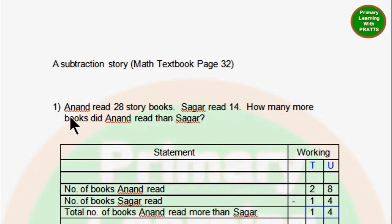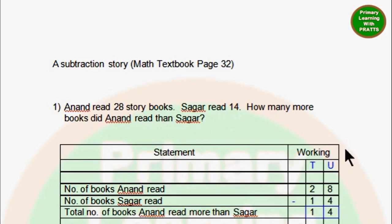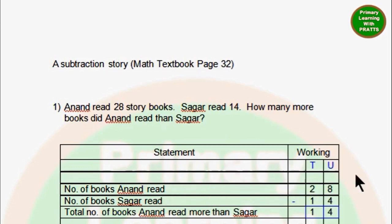The first one is: Anand read 28 story books. Sagar read 14. How many more books did Anand read than Sagar? Now in your book, you will make two columns — statement and working. Under working, you will write T and U in your square line books, and again you will leave one line. Then we will start with our statements.